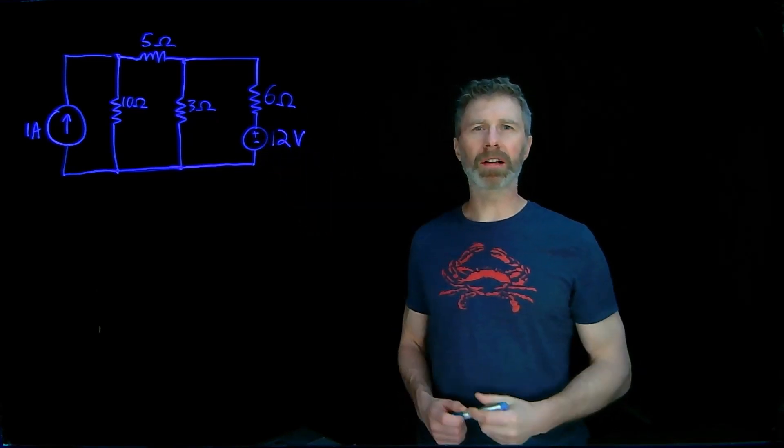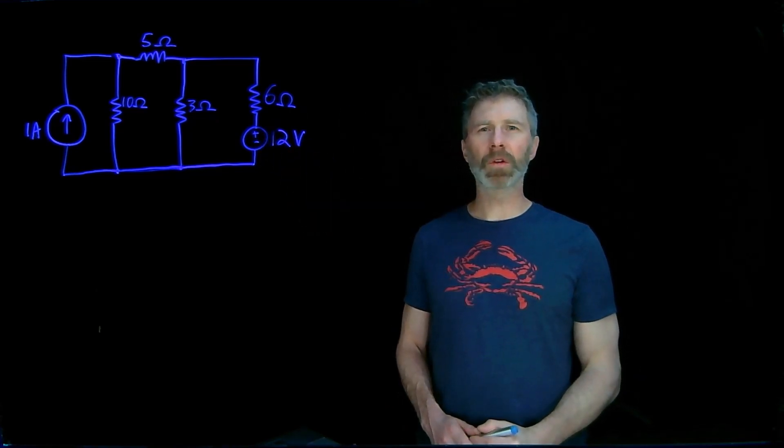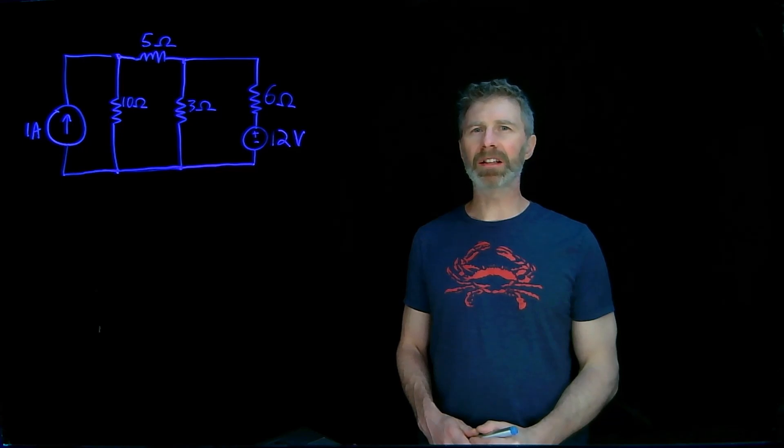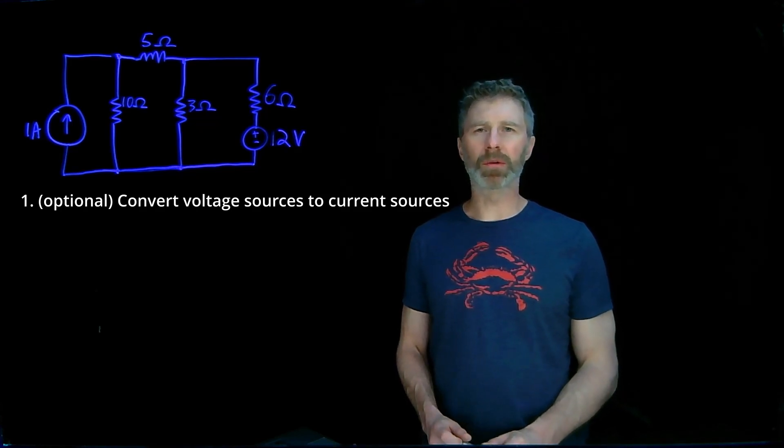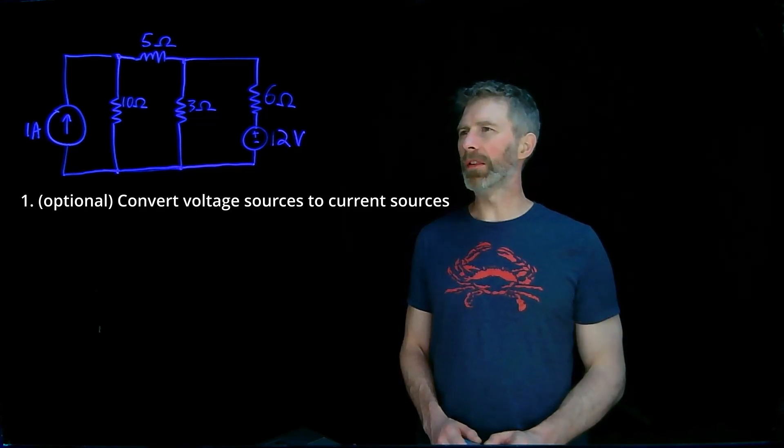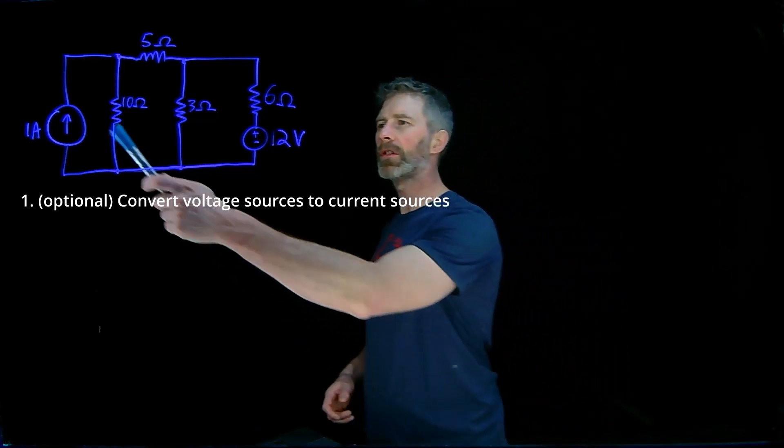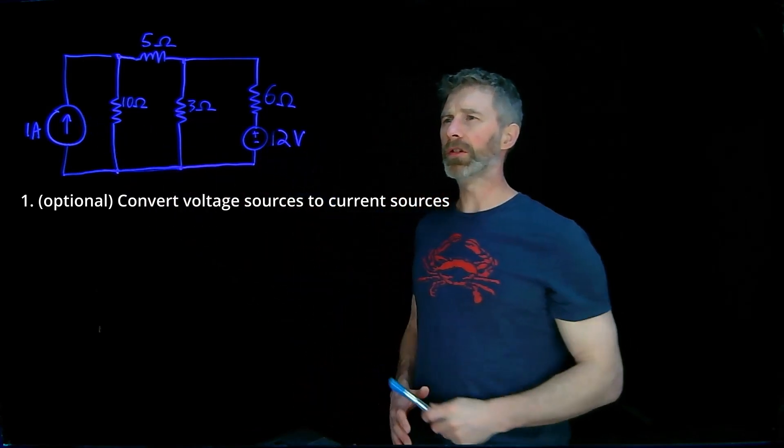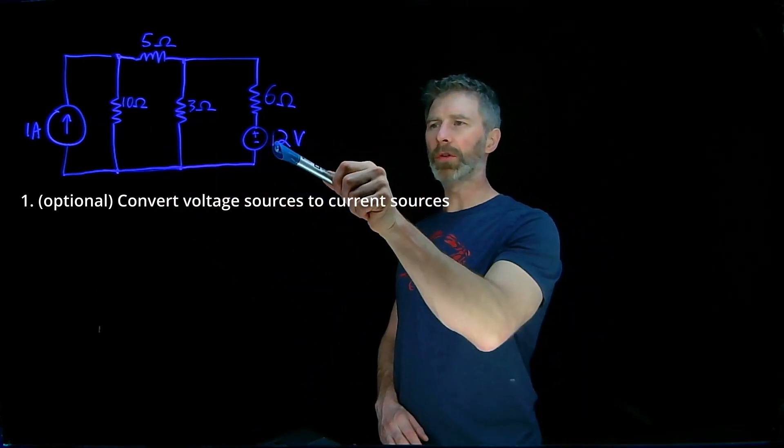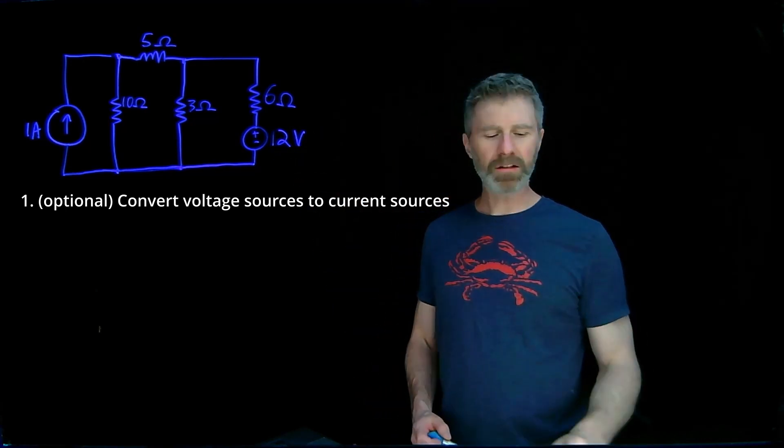We're going to do the nodal analysis on that circuit there. The first step in nodal analysis is not strictly necessary, but it can simplify things. Convert all of the voltage sources into current sources. In the circuit we have, we have one current source and one voltage source. So we'll convert this voltage source into a current source.